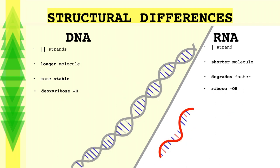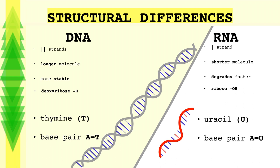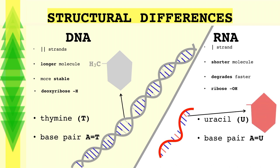Now let's discover two more structural differences which are related, so it's easy to remember them together. In DNA, one of the nitrogenous bases is thymine, and instead of thymine, in RNA there is uracil. So in DNA we have the nitrogenous bases adenine, cytosine, guanine, and thymine, whereas in RNA the bases are adenine, cytosine, guanine, and uracil. These two bases are structurally very similar — the only difference is that there is a methyl or CH3 group in thymine, which is not found at the same location in uracil. However, the parts of uracil and thymine responsible for the complementary binding of adenine are identical. This means that adenine in DNA complementarily binds to thymine in the opposite strand, and adenine in RNA can complementarily bind to uracil.